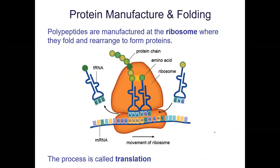Proteins and amino acids are strung together at the ribosome. This process is called translation, which we'll talk a lot about later — probably around topic 13, 14, or 16. The process involves transfer RNA and messenger RNA, so much more on that later.